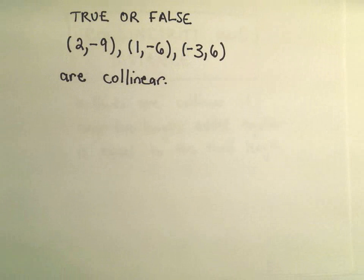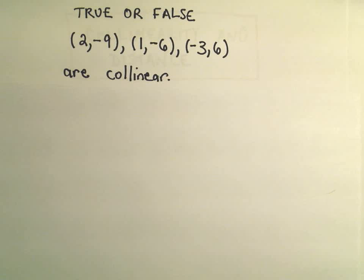So what do we mean here? Suppose we ask a true or false question: this point (2,-9), (1,-6), and (-3,6). We want to know if those are collinear.